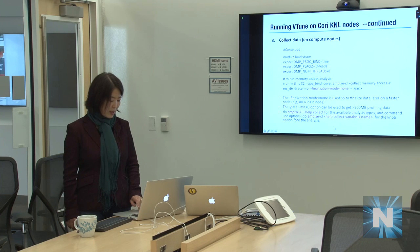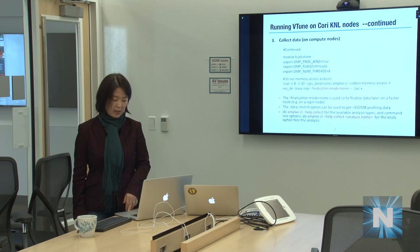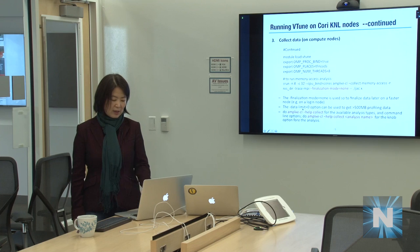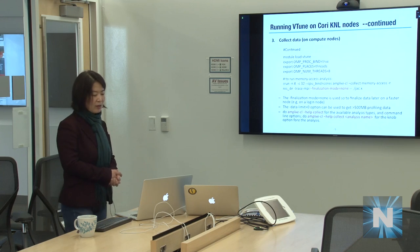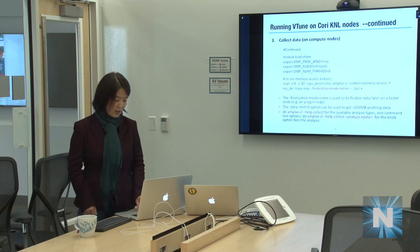Another useful option is --data-limit=0, which means collect unlimited data. Without it, the default limit is 500 megabytes, after which collection stops. For real application codes, you'll likely hit this limit very quickly — for example with VASP, the limit was reached before even one iteration completed.